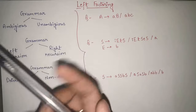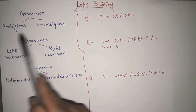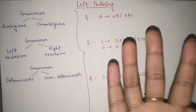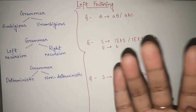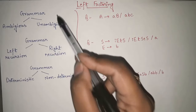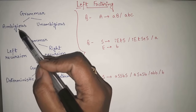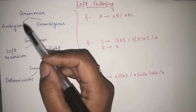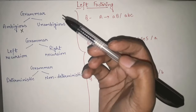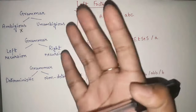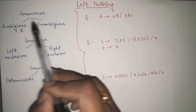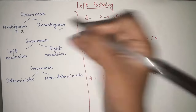You must have already visited my earlier videos where we have already discussed ambiguous and unambiguous grammar, as well as left recursion and right recursion grammar. I will give you the link in the description in case you have not visited them yet. Among these categories, we have already seen that if any grammar is ambiguous, it is of no use, because most parsers — top-down and bottom-up — cannot parse ambiguous grammar. So we always prefer our grammar to be unambiguous.